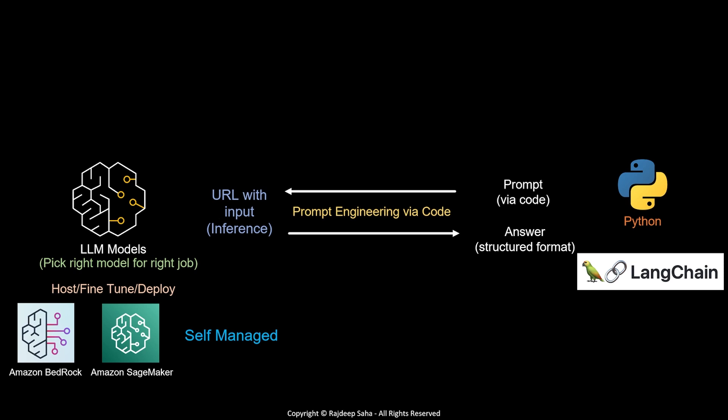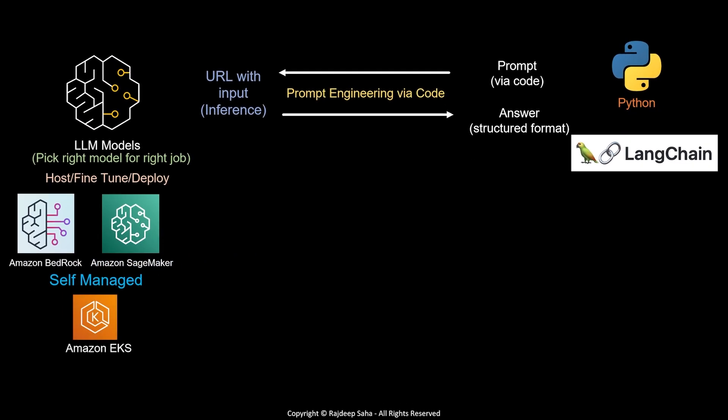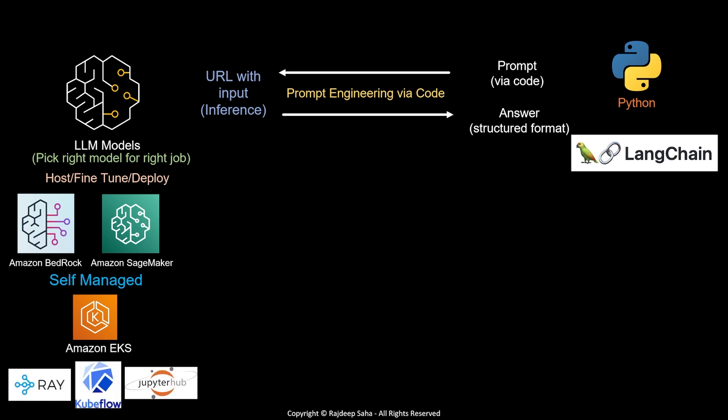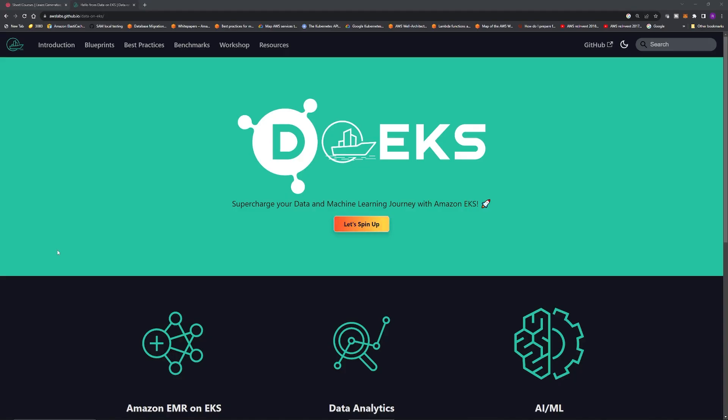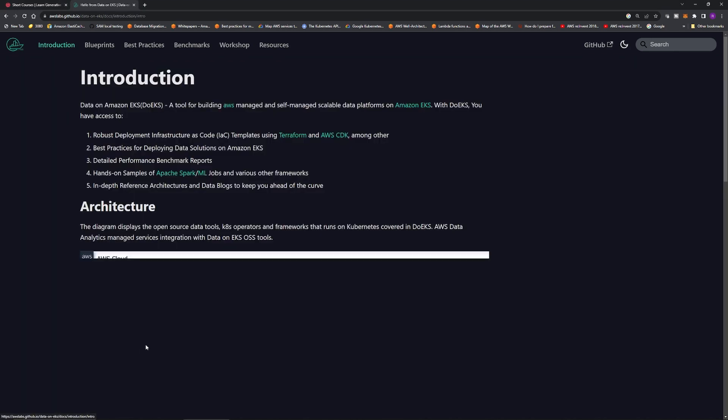I already have deep knowledge on Kubernetes, so I am utilizing that. I am learning what machine learning frameworks can run on top of EKS to host, fine-tune, and deploy. For that, I am learning Ray Framework, Kubeflow, and JupyterHub. Ray is the newest framework and a little bit easier to use, so I am doing more work on Ray. I am learning Kubeflow mainly to answer customer questions. JupyterHub is a notebook where you run prompts and lines of code rather than writing the whole code at once. I am learning these from Data on EKS, also available for free.